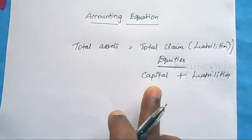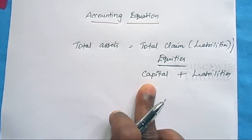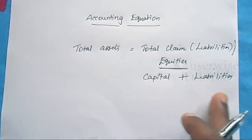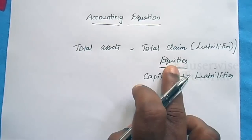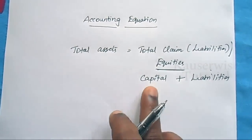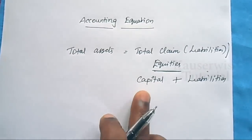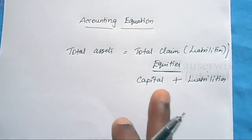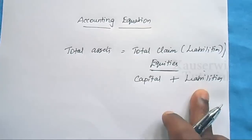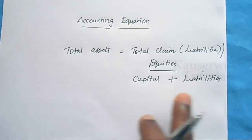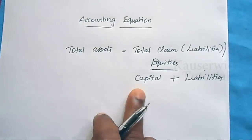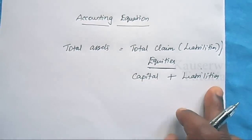So total asset is equal to capital plus liabilities. Capital means internal equity, that is internal liability. External equity is called liability. These two things combined are called equities. So total asset is equal to capital plus liabilities.